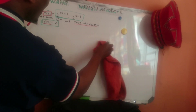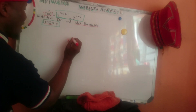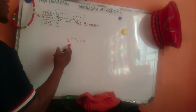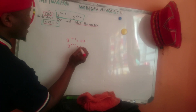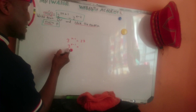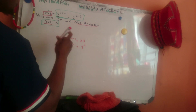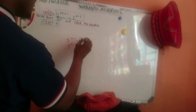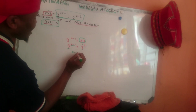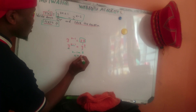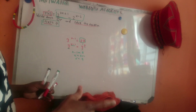Let me show you another law of exponential. For example: 3^(x−1) = 27. You see 27 — you can break it as a power of 3. Since 3 × 3 × 3 = 27, it becomes 3^(x−1) = 3^3. Bases are the same, so x − 1 = 3, giving x = 4. Remember: when bases are the same, powers must be equal.